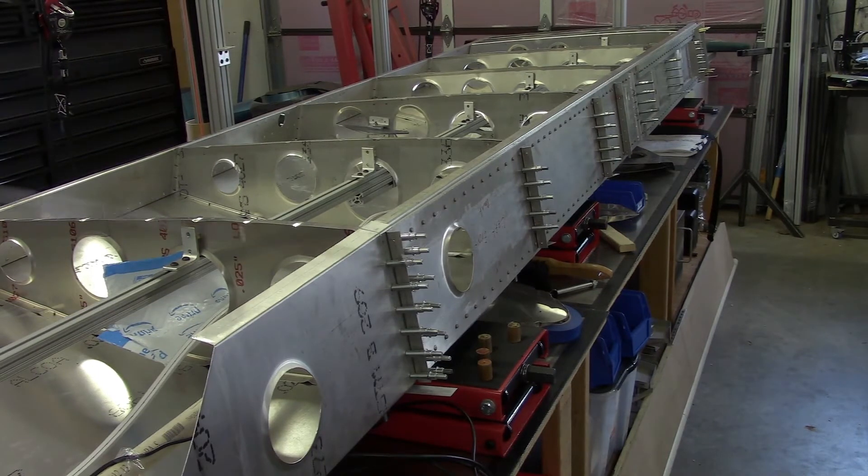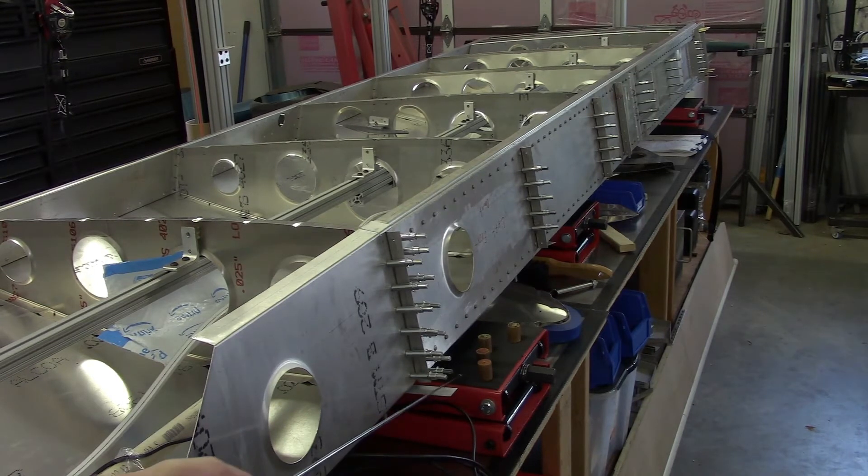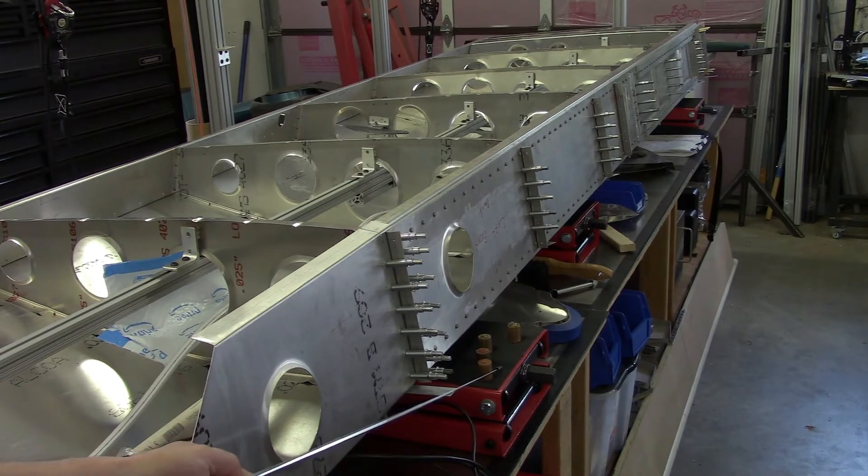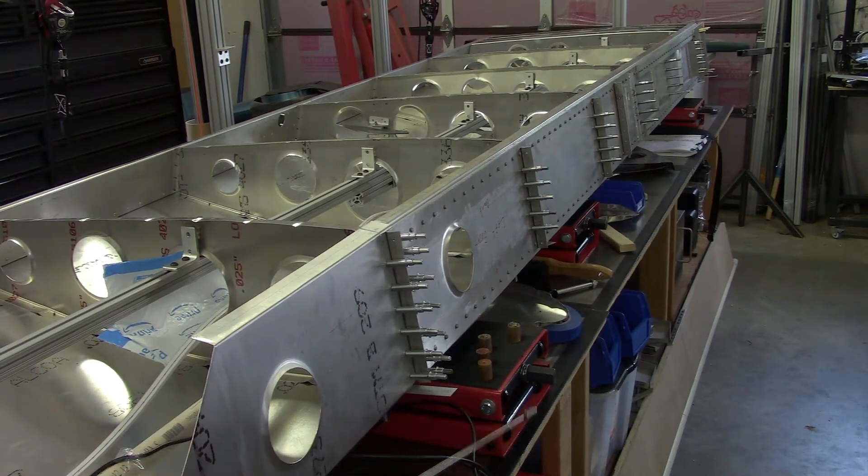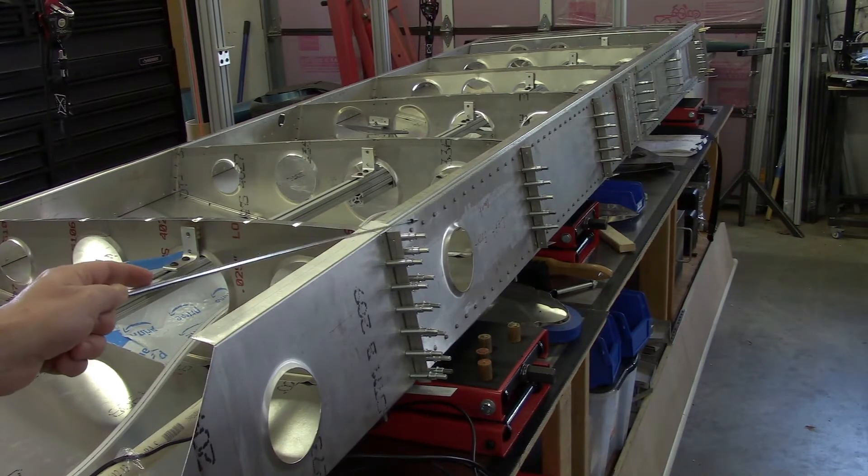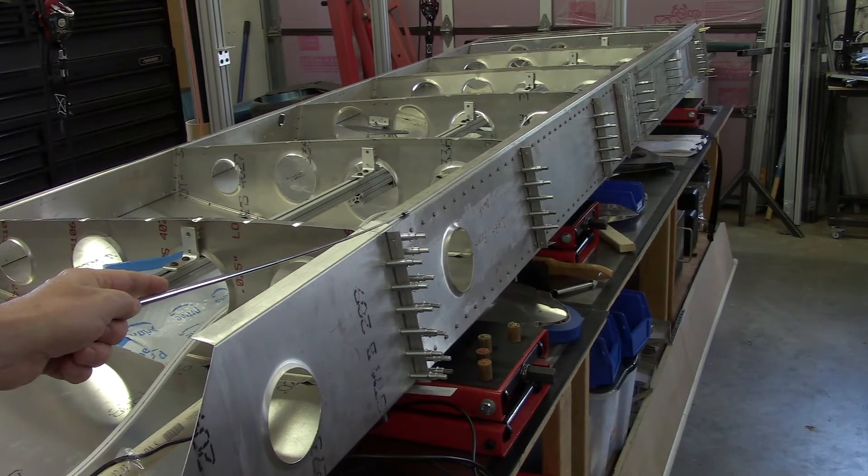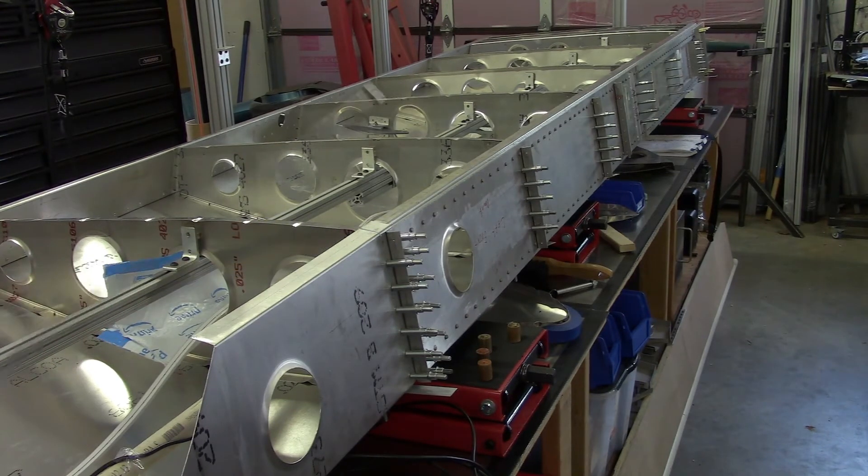The normal way that Zenith recommends it is you would run something like a 2x4 underneath. I could have done it that way, but I wanted something more adjustable. So what I wound up using was three of these motorcycle lifts. That gave me the ability to very easily fine-tune the level to avoid any twisting in the wing.